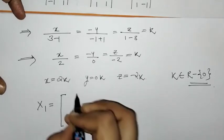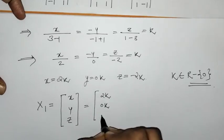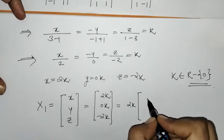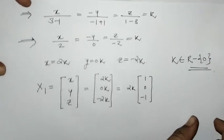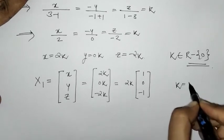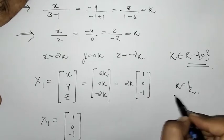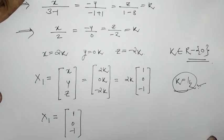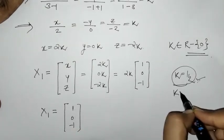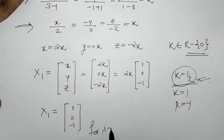So we get the first eigenvector by substituting x, y, z: the vector is (2k, 0, minus 2k). Taking 2k outside, we have (1, 0, minus 1). For k equals 1/2, we get x1 equals (1, 0, minus 1). This is the eigenvector corresponding to lambda equals 2.